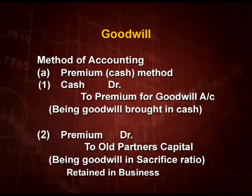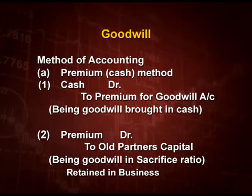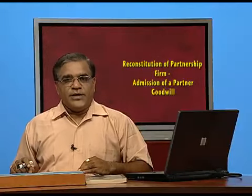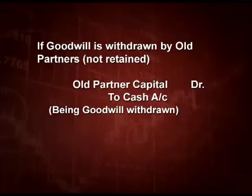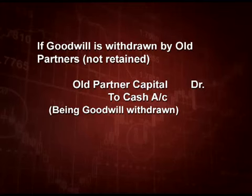Next entry: this premium is distributed to the old partners. Premium account debit to old partners' capital account, and this is given in sacrificing ratio. Why sacrificing ratio? Because whosoever sacrifices more will get more. This entry is done if the goodwill is retained in the business, that is the old partners are not withdrawing it. If goodwill is withdrawn by the old partners, then one more entry is done: old partners' capital debit to cash account, being goodwill withdrawn.